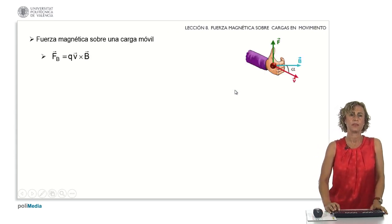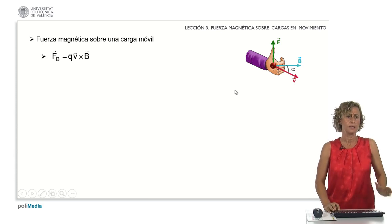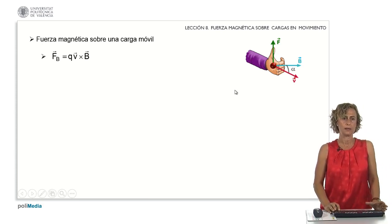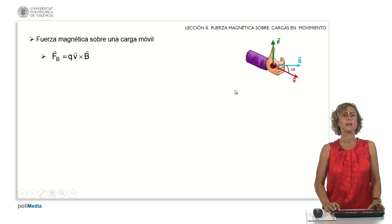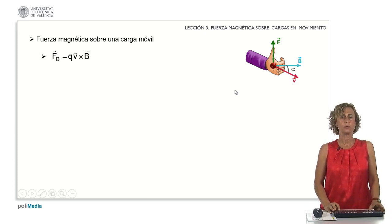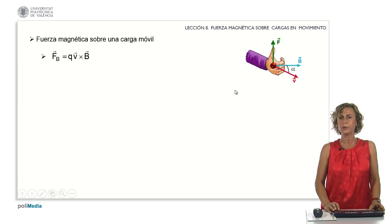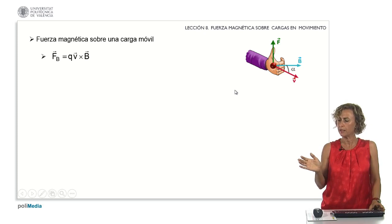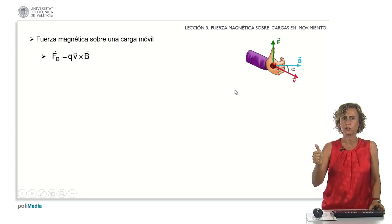The expression for magnetic force is q — representing the charge of the particle — multiplied by the vector product of v and B. It's important to recall that the vector product results from the right-hand rule, moving from the first vector to the second via the shortest path.